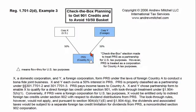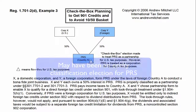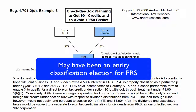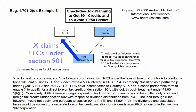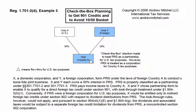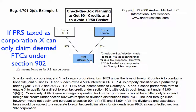Now back to this example. PRS was taxed as a partnership, meaning that there may have been an entity classification election made for PRS. With PRS taxed as a partnership, foreign income taxes paid by PRS flow up to Corp X so that X can claim foreign tax credits under Section 901. If PRS were taxed as a corporation, X would only be able to claim deemed paid foreign tax credits under Section 902 when PRS pays dividends to X.